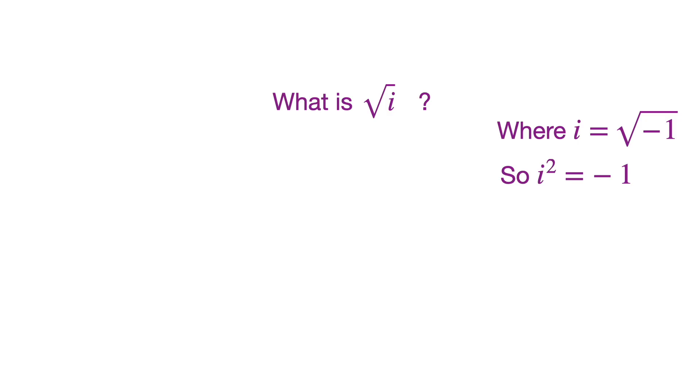Well, it's probably a complex number. So let's write the square root of i is a plus bi. That's the general form for a complex number where a and b are real numbers.